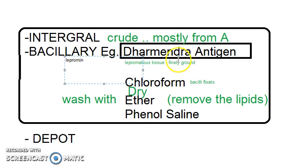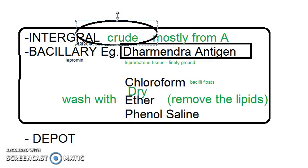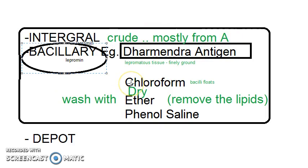Integral lepramine is actually crude — it will not have much bacilli; tissue content is more. It is crude. You will just take it from the armadillo. So this is an integral lepramine. Bacillary lepramine, on the other hand, has more bacillary components.